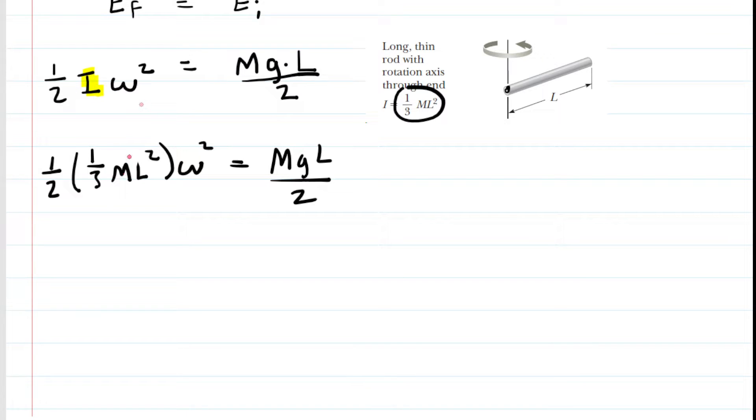Now what we'll do is we'll try to isolate that angular speed, that omega. And if we look carefully, the mass appears on both sides. So if we divided both sides of the equation by mass, the mass would cancel. We can see on the left side, we have one half times one third. So we have one sixth. And then that's L squared times omega squared.